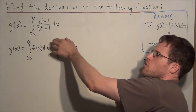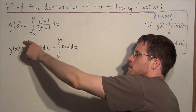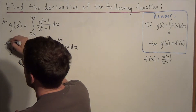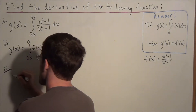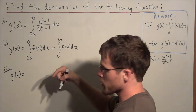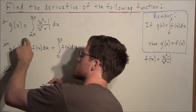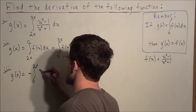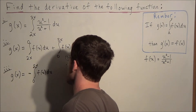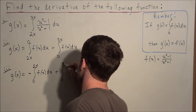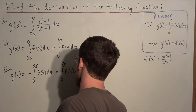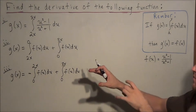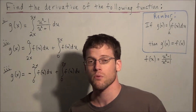Now we're a little closer, but the x is on the bottom of the first integral. We want x on top. So for line 3, g of x equals — remember we can flip an integral, but when we flip the top and bottom we have to bring a negative out in front. So we have negative times the integral from 0 to 2x of f of u du, plus the integral from 0 to 3x of f of u du.